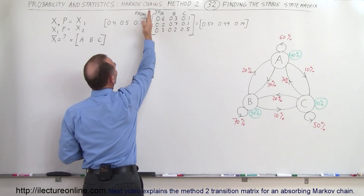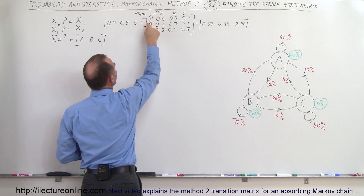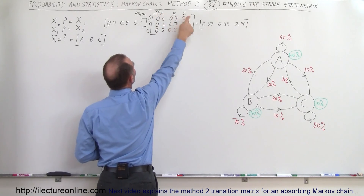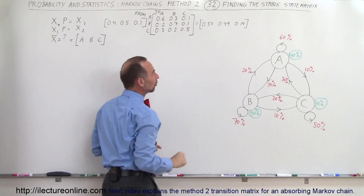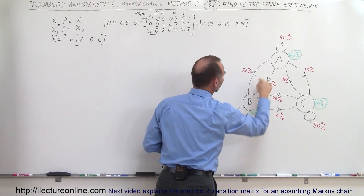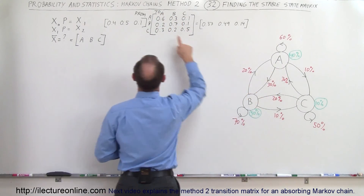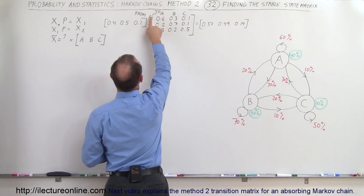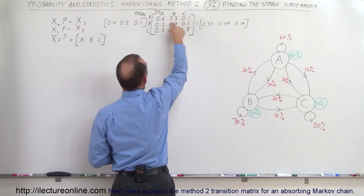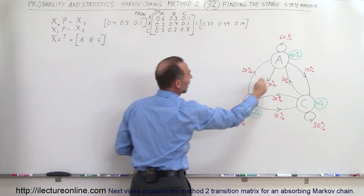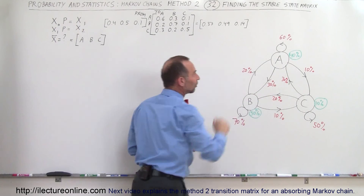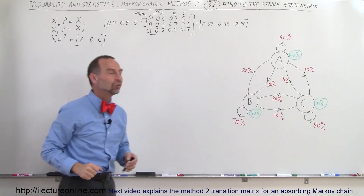So we have from store A, B and C to store A, B and C. Notice for example from store A to store B — that's 30% — and we can see that indeed 30% are going from A to B.